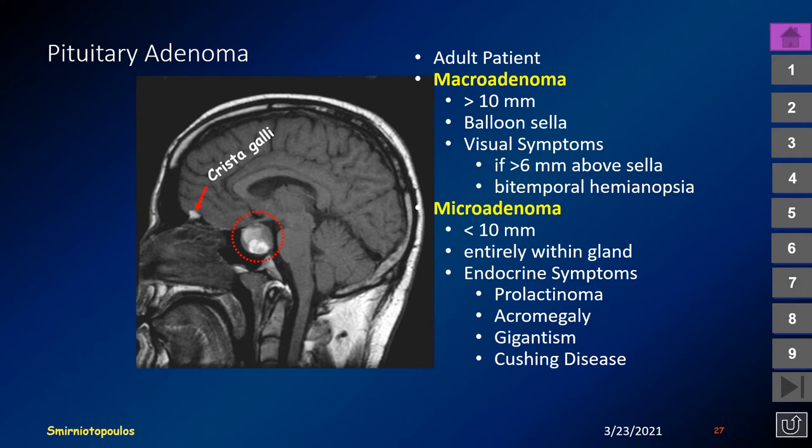Patients with microadenomas present because of endocrine symptomatology — either from a prolactin-producing tumor, acromegaly or gigantism from a growth hormone-producing tumor, or Cushing's disease from a tumor producing ACTH.